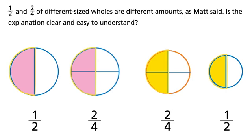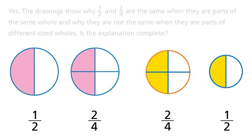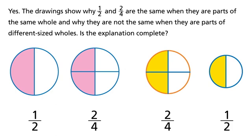Is the explanation clear and easy to understand? Yes. The drawings show why one-half and two-fourths are the same when they are parts of the same whole, and why they are not the same when they are parts of different sized wholes.